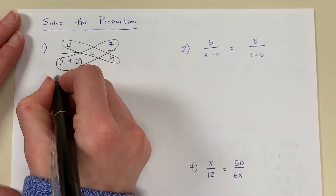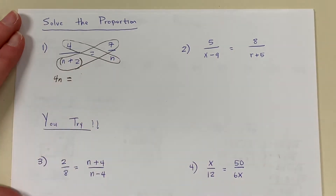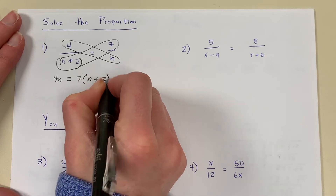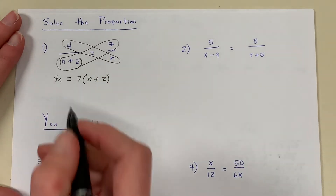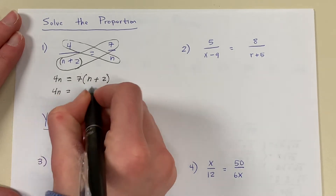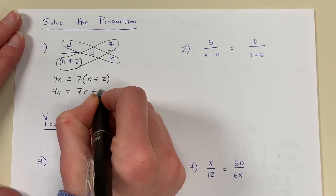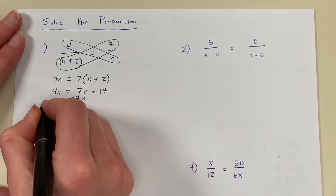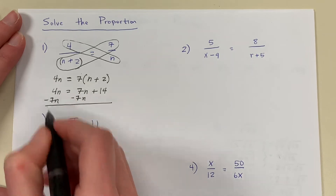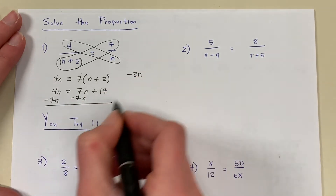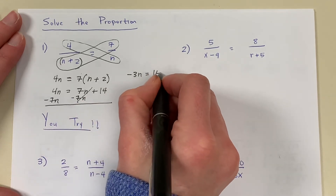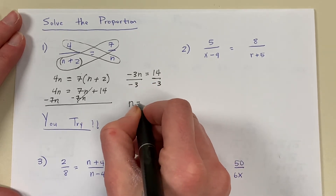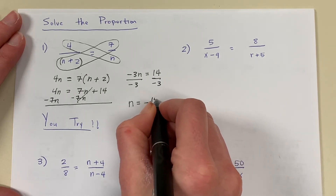So I have 4 times n is 4n, and 7 times the quantity n plus 2. I'm going to solve the equation. I distribute the 7 first: 7 times n is 7n, 7 times 2 is positive 14. I can subtract 7n from both sides: 4n minus 7n is negative 3n, and that's equal to 14. I divide both sides by negative 3, and I'm going to keep my answer as a fraction. My final answer is negative 14 thirds.